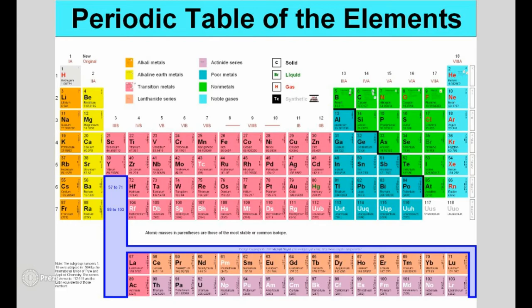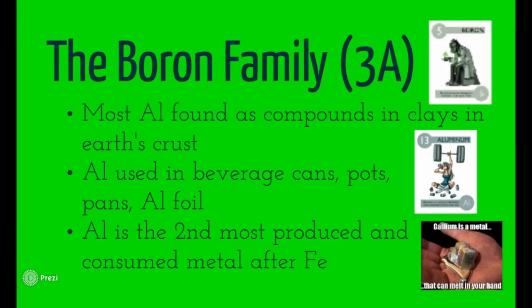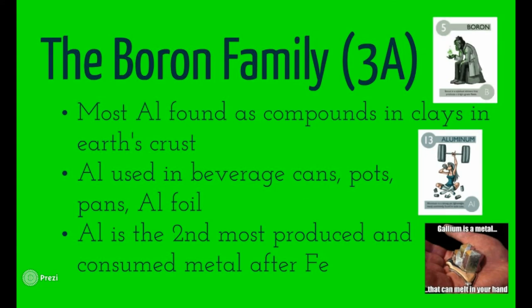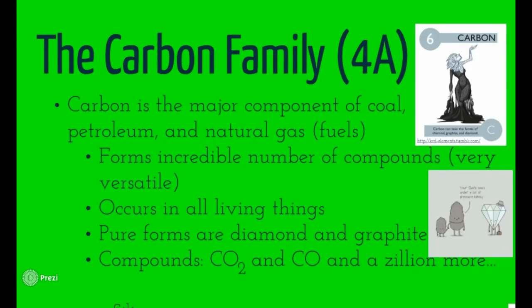Let's move on to the poor metals, starting with the boron family, group 3A. We start to see metalloids overlapping here. Aluminum is found in this family — it's mostly found in clay. Carbon family is next, and I'll start slowing down a bit.